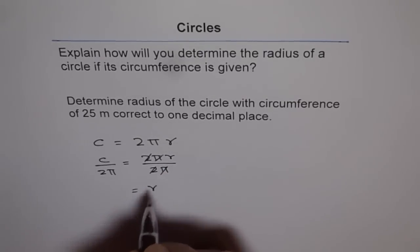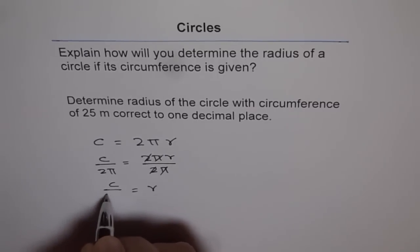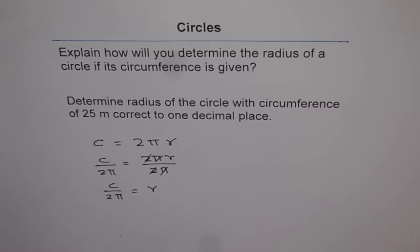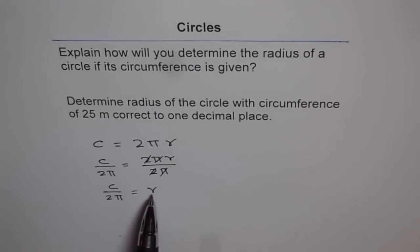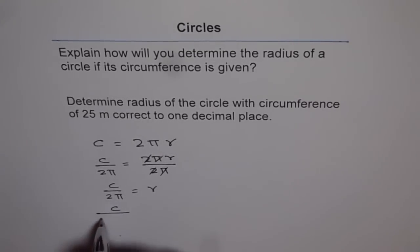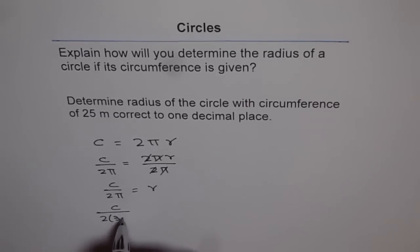So we get r equals c divided by 2 pi. And therefore, we can say we can find radius by dividing circumference by 2 pi, which is 2 times 3.14. So basically, c divided by 2 times 3.14 is the radius.